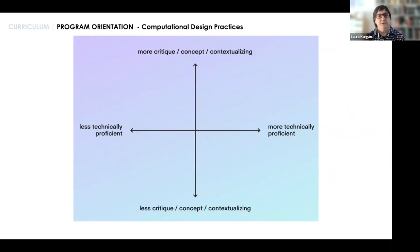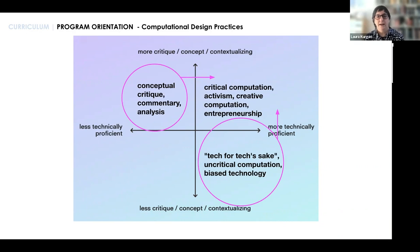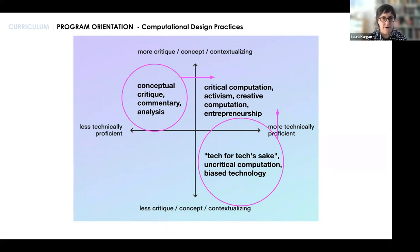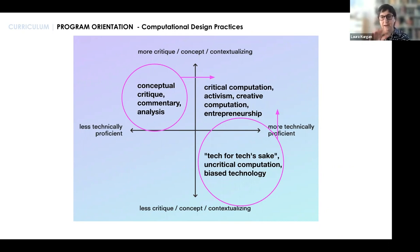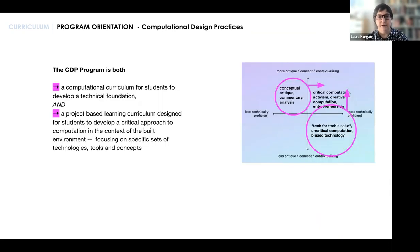In terms of how we think of ourselves, we have created a grid to orient our students. You might come from a completely technical background with no thought about computation in relation to the built environment, or from an absolute humanities base with very little programming. We try to bring everybody into the top right quadrant, so that we're always talking about critical computation, activism, creative computation, and entrepreneurship. We think of ourselves as both a computational curriculum for technical foundation and a project-based learning curriculum for a critical approach to computation in the built environment.